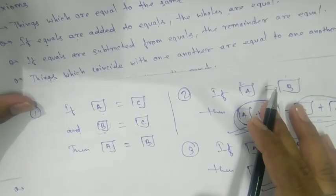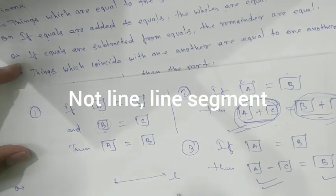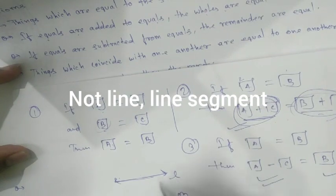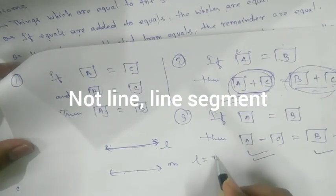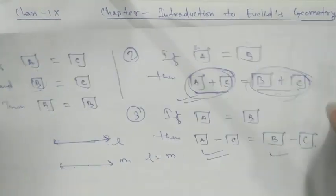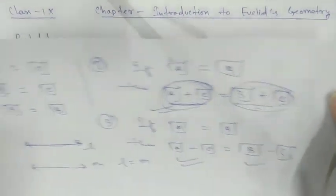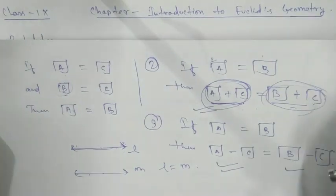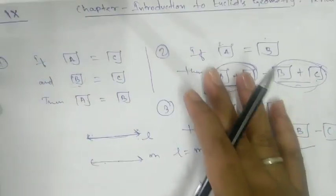Axiom 4: Things which coincide with one another are equal to one another. If we take a line L and another line M and place one on top of the other, and they coincide completely — you cannot see the other line — then L equals M. Like taking two pages and placing one on the other: if they coincide from each part, they are equal to one another.